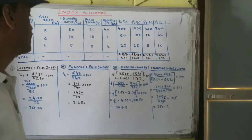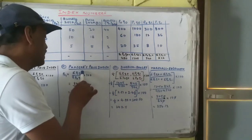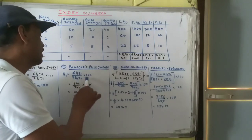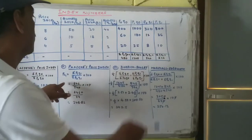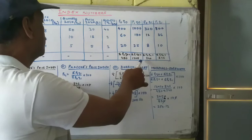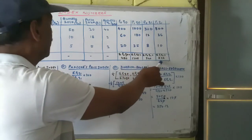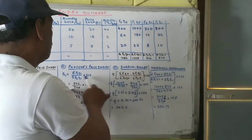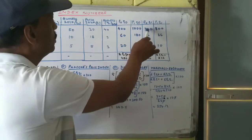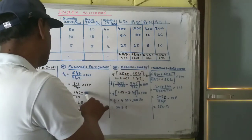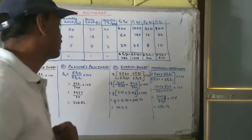This is the Paasche Price Index, second one. Formula is P1Q1 upon P0Q1 into 100. Just look here. P1Q1, last one 846. P0Q1, 340. And after getting the calculation, you will get this number.